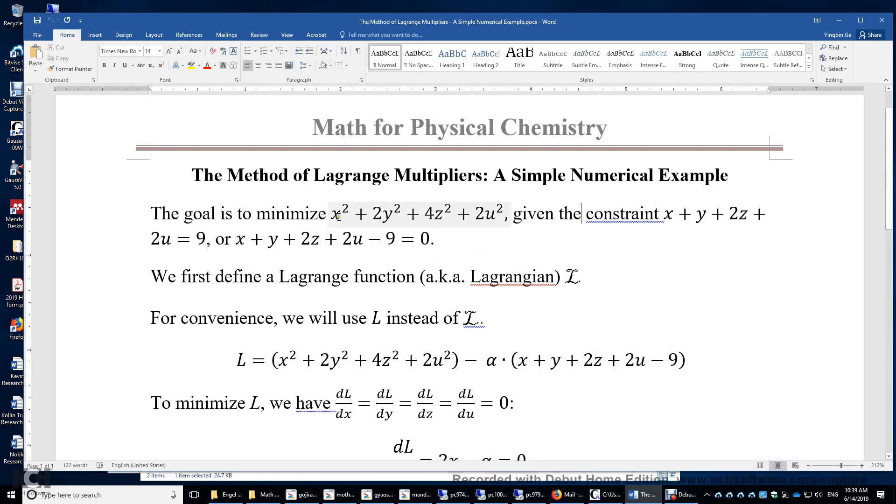Let's say our goal is to minimize this function. Obviously, the minimum value of this function is 0 if x is 0, y is 0, z is 0, and u is 0.